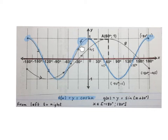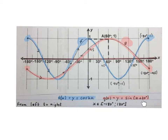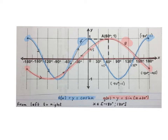Decreasing, increasing, decreasing, increasing. The red graph is called g of x equals y equals sin(x + 30°). It starts at minus 180 included, goes down, goes up, goes down, and stops at 180 degrees. It decreases, increases, decreases.